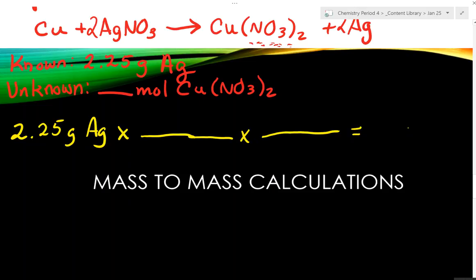We're going to have two conversion factors so we can get to moles of copper(II) nitrate. The first thing, we want to get rid of grams of silver and get to moles of silver. What is this conversion factor? Molar mass. What's silver weigh? Let's call it 108.